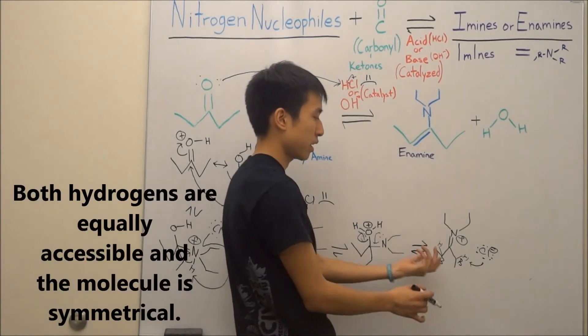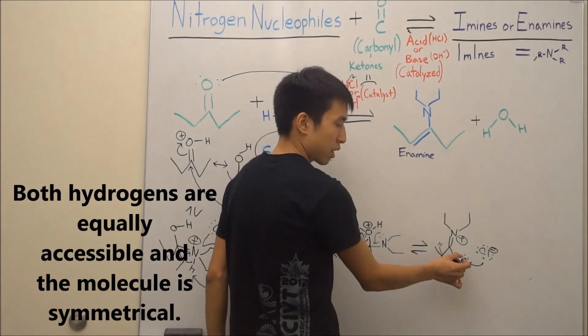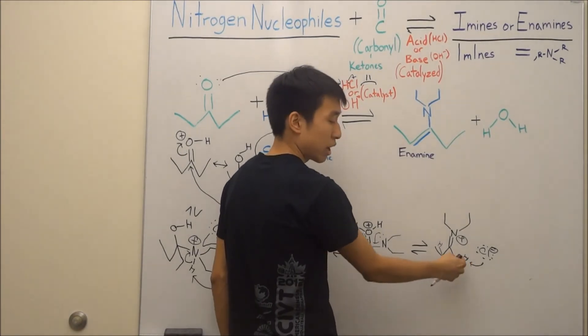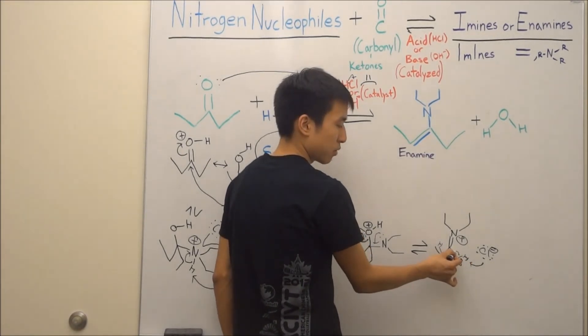So you target a beta hydrogen. And then you deprotonate the hydrogen, so the electrons in the bond are now freed up. So then it goes over here.